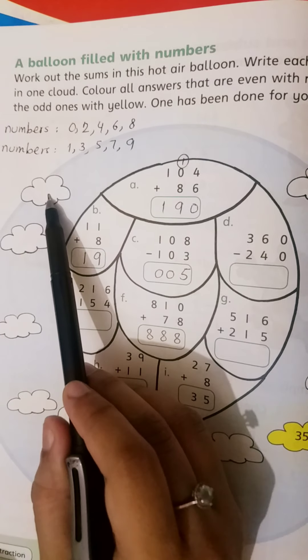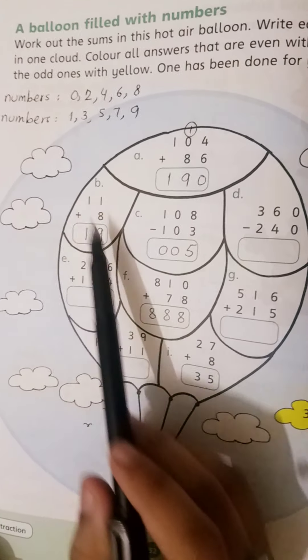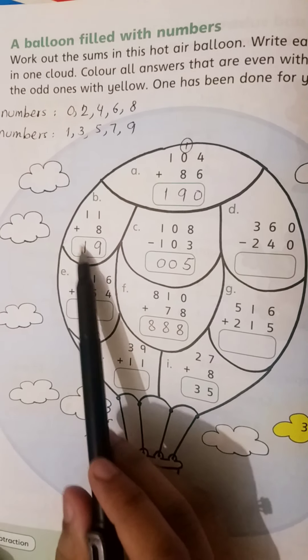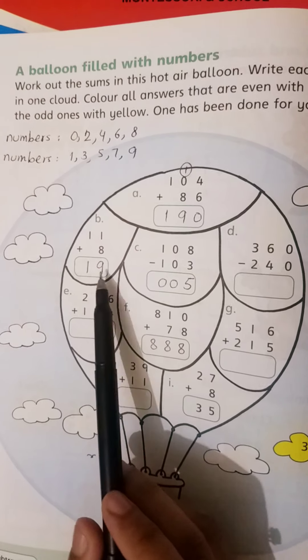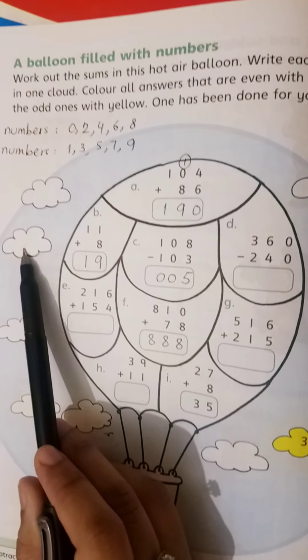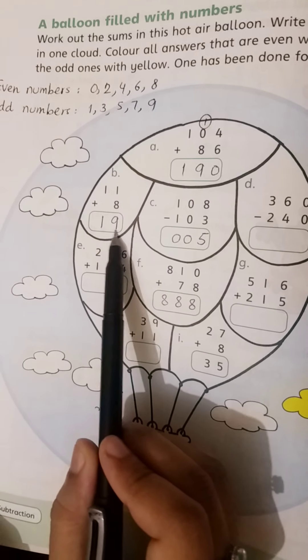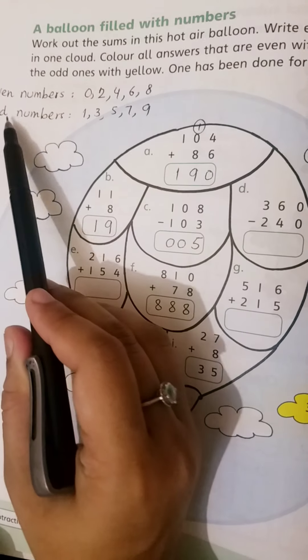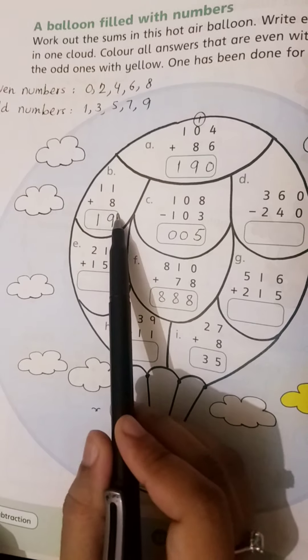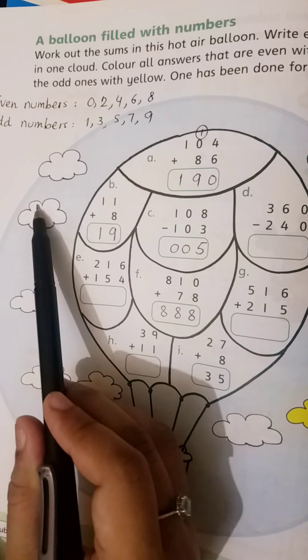Color it red. The answer is 19. Write 19 here. Is 19 even or odd? Because its once place is 9, 9 is odd, so 19 is an odd number. Write 19 here and use yellow color.